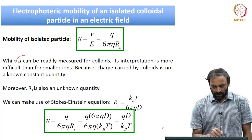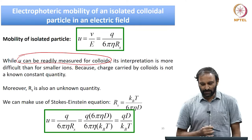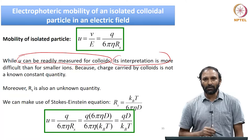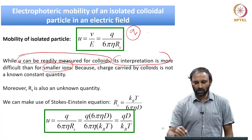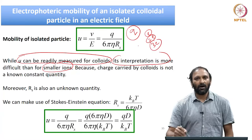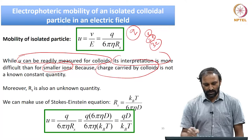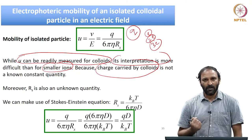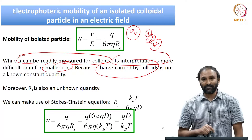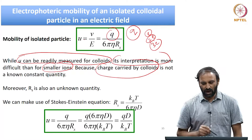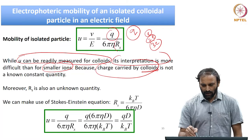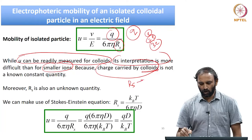While mobility can be readily measured for colloids, its interpretation is more difficult than for simple ions. For isolated ions, the charge is known: it is E, 2E, or 3E depending on the ion. However, the charge carried by colloidal particles is not a known quantity; it varies depending on the number of surface charges and factors such as electrolyte concentration. Furthermore, Rs — the radius of the colloidal particle — is also an unknown quantity.